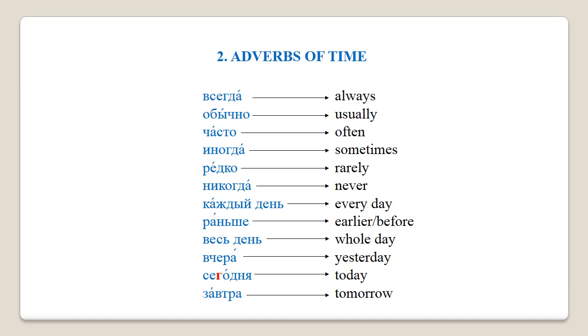Excellent! Well done! Please note that the word 'today' — сегодня — is pronounced with a V instead of a G sound, which was mentioned in supplementary materials in previous lectures.